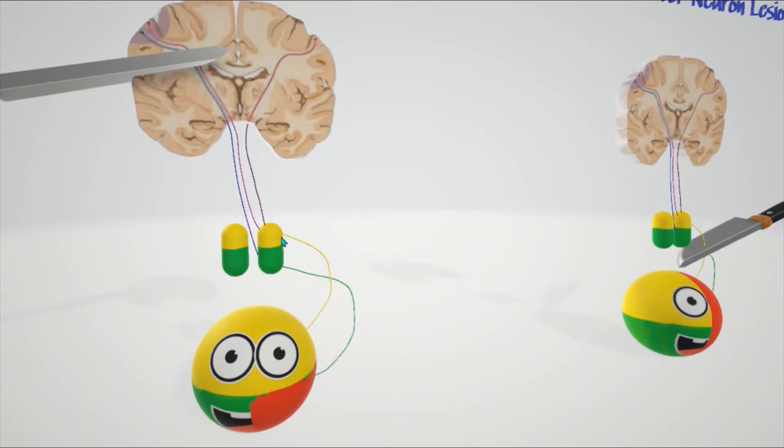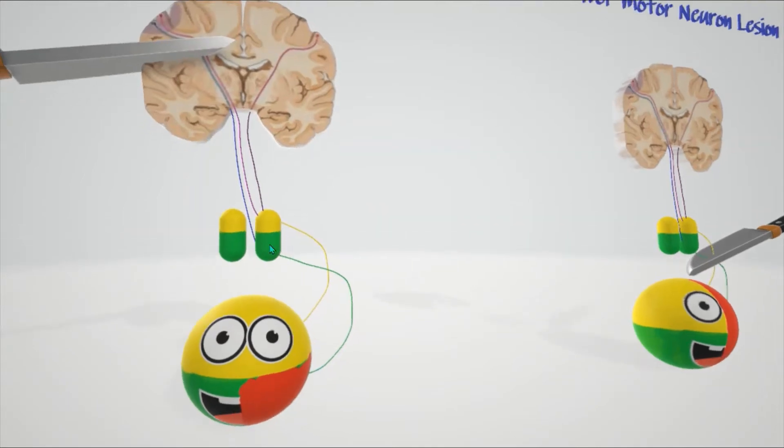The top half, in yellow, has fibers that supply the upper face. That's why the face is in yellow, because the top half of the nucleus is supplying the upper face. The lower half, in green, is supplying the lower half of the face.